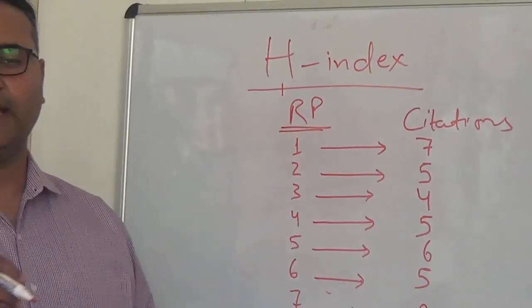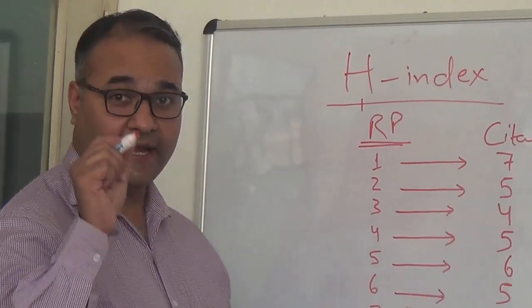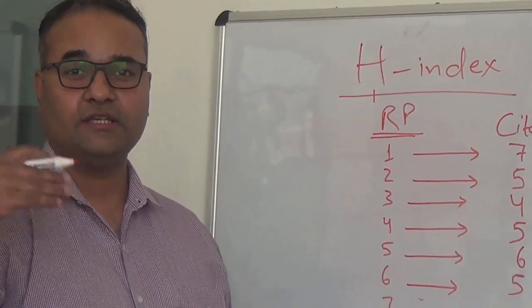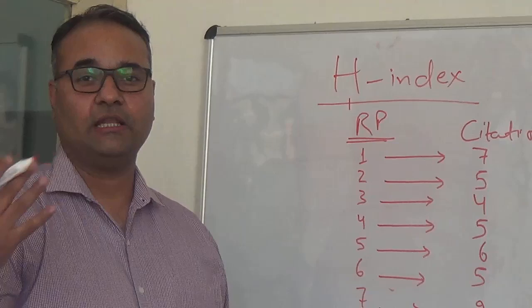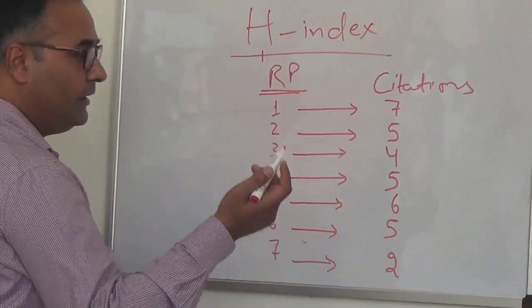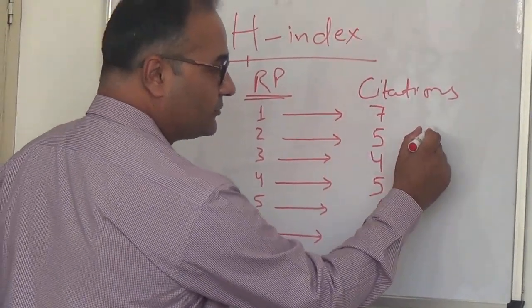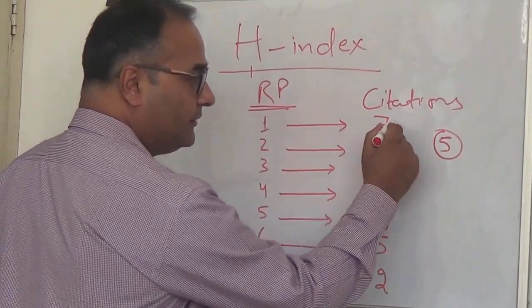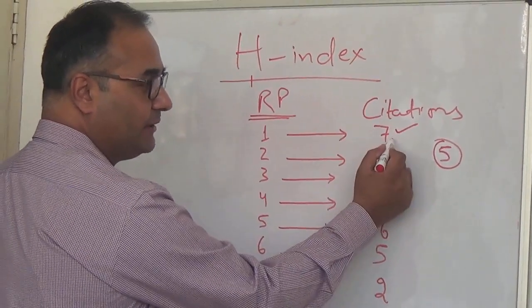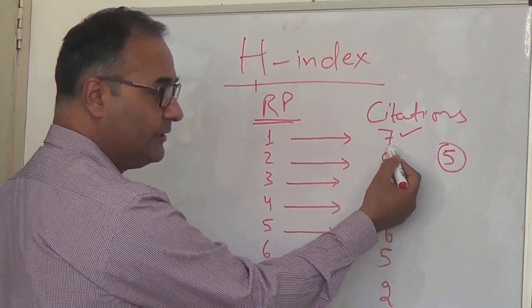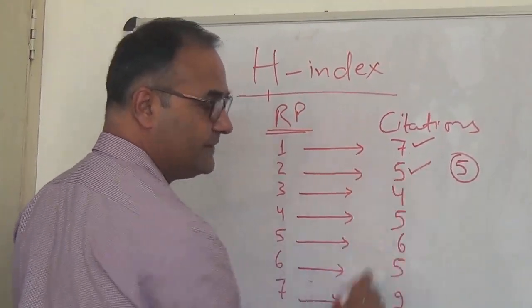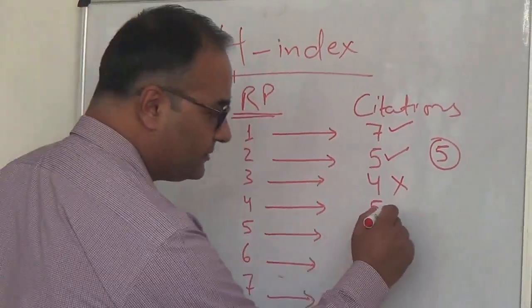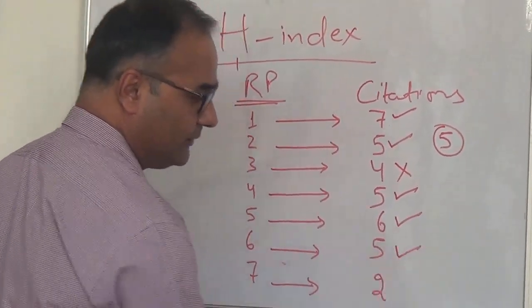Now we need to find out the H-index in this particular case. I need to find out that magic number. Let me work with a random number of H-index, say 5. Let me check whether this case has an H-index of 5 or not. If I assume it to be 5, this paper qualifies because it has been cited more than 5 times—it has been cited 7 times. This paper qualifies because it has been cited 5 times. This paper doesn't qualify because it has been cited less than 5 times. This paper qualifies, this paper qualifies, and this paper doesn't qualify.